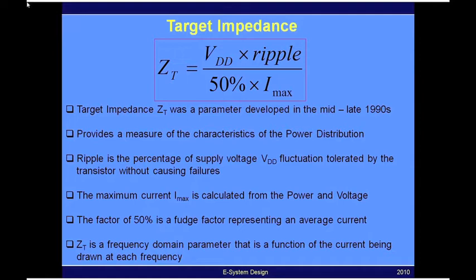If you look at Ohm's law, it's the ratio of voltage to current. The difference here is that the voltage and current represent transient or frequency-dependent values. In the numerator, you have VDD times ripple, where ripple represents the percent change allowable between the VDD and ground nodes of the transistor-level circuit. In the denominator, you have the current Imax.